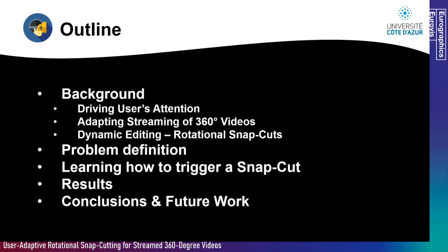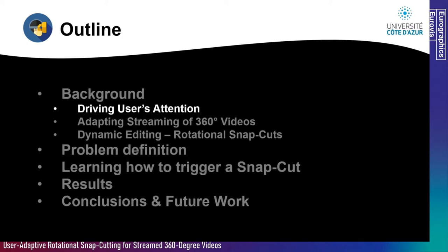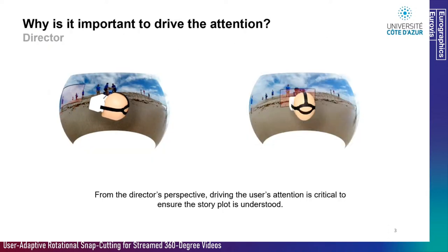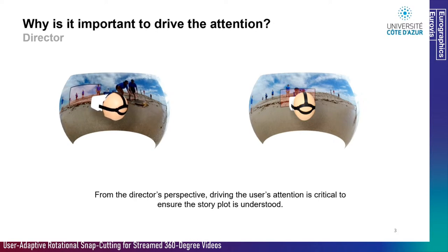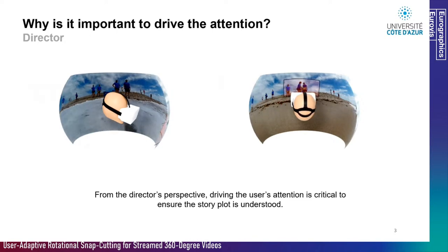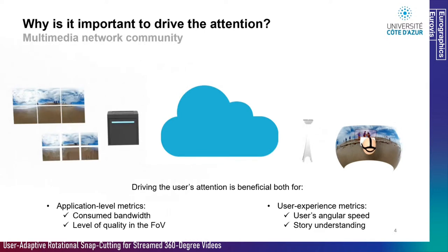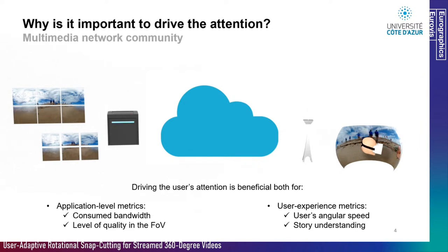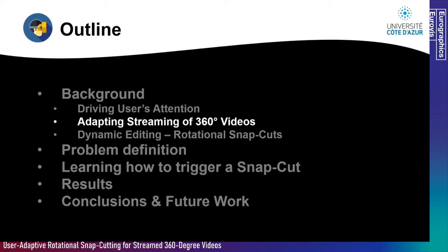Driving the user's attention is critical for a director to ensure the story plot is understood. Consider two cases: on the left, the user's attention is not driven to watch the turtle from the beginning and therefore misses almost all the action. When the attention is driven by simply repositioning the user in the main action at the beginning of the scene, the story plot is better understood by the viewer. We investigate attention driving techniques from the multimedia network community perspective: driving user attention lowers the randomness of user motion, and using this a priori knowledge in the streaming decision is beneficial for both application-level metrics and user experience metrics.